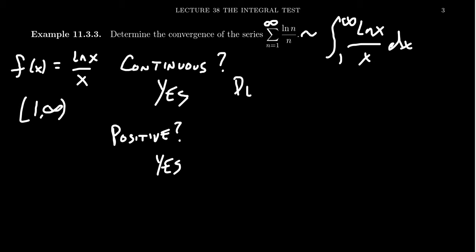What about decreasing? This is where things get a little more tricky. We could try plugging in x equals 1, 2, 3 to get an idea, but that only gives integer values and requires computing natural logs of 2 and 3, which isn't obvious. For determining whether it's decreasing, we really should look at the derivative.